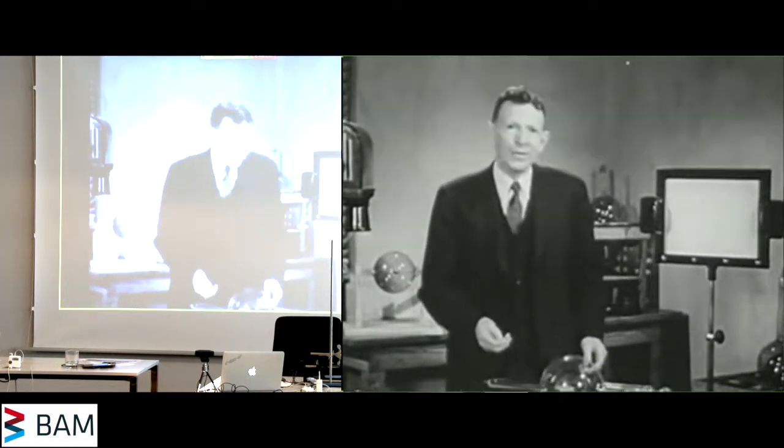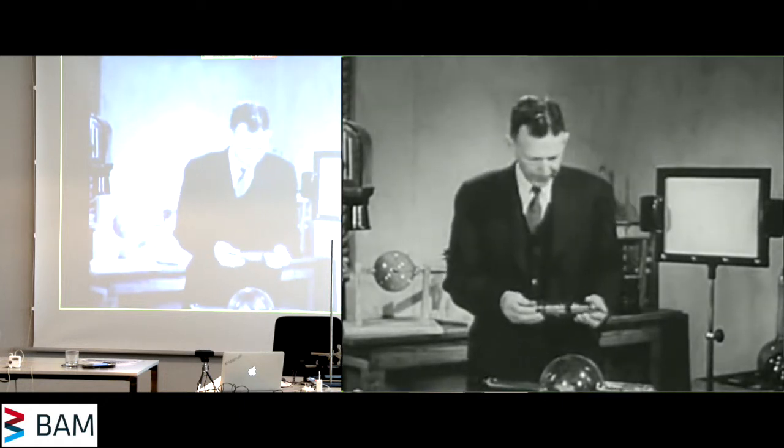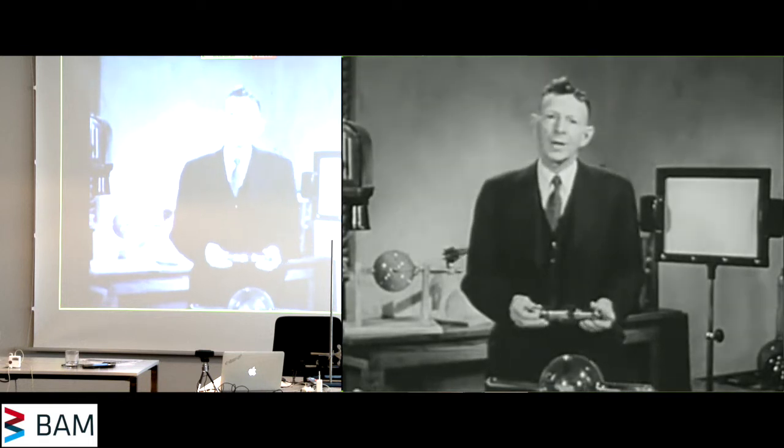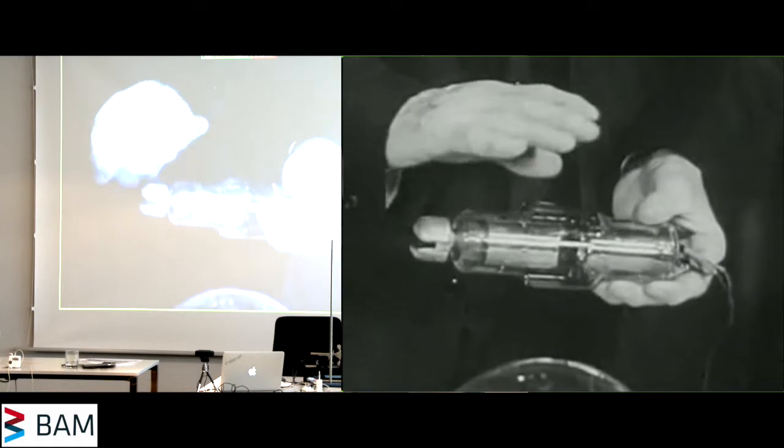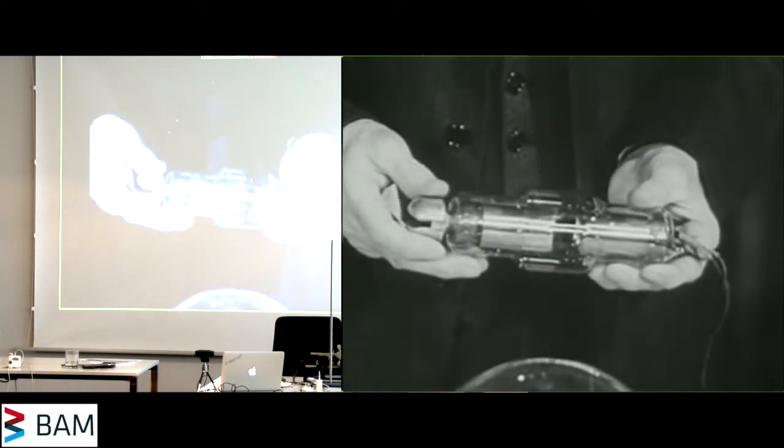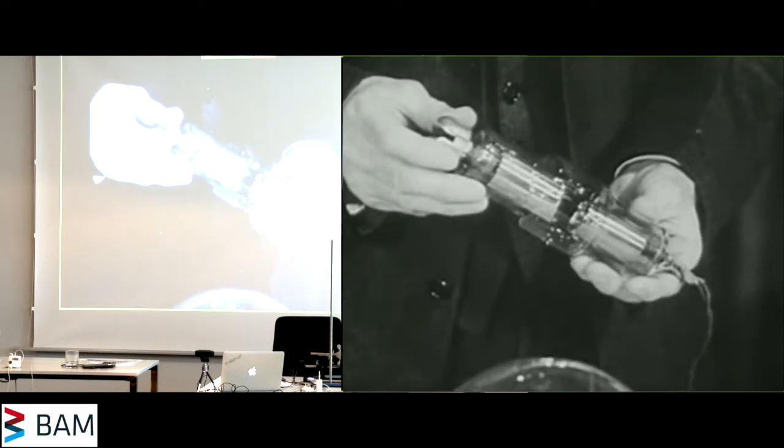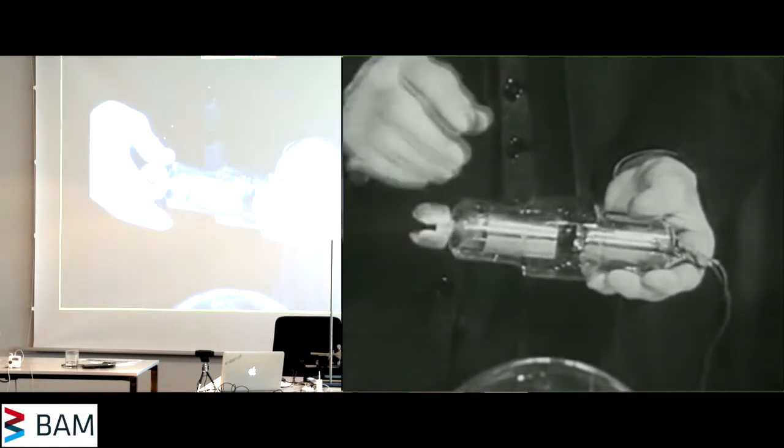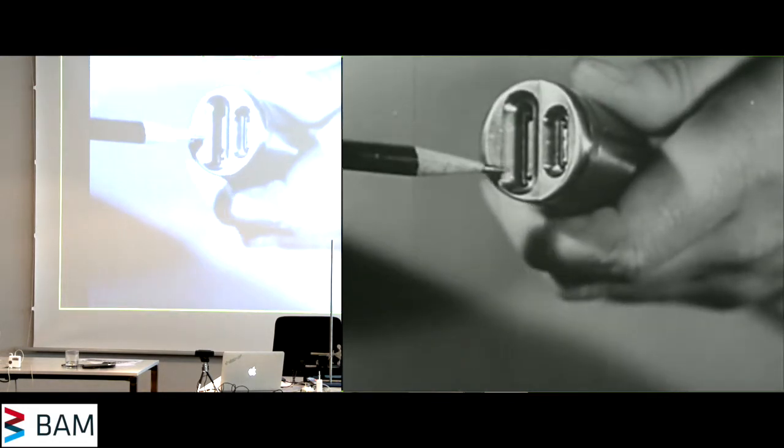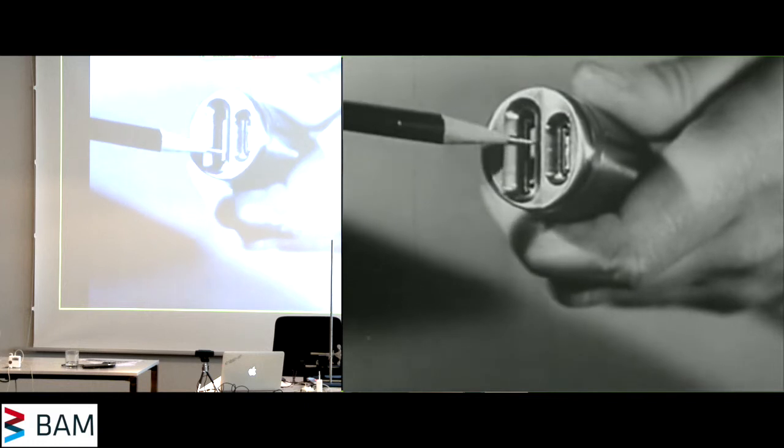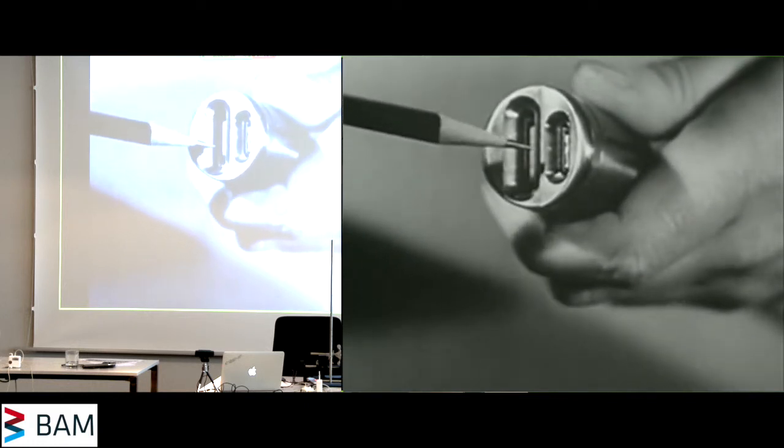In the present day hot cathode x-ray tube, of which this is one of several different types, there is a high vacuum. And the production of electrons depends only on the size and temperature of an incandescent tungsten filament with a cup-shaped structure surrounding it. This particular tube has two filaments, either of which may be used.